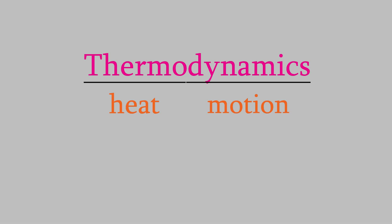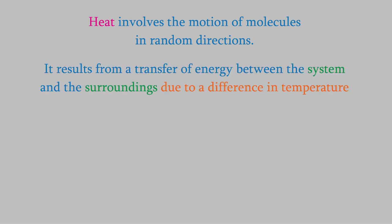Actually, we'll be looking at two different forms of motion in this part of the course. First is heat. Heat is characterized by the motion of molecules in a substance in random directions. A good definition of heat is that it's a transfer of energy resulting from a difference in temperature between a system and its surroundings, and this energy transfer is accomplished by molecules that move in random directions.